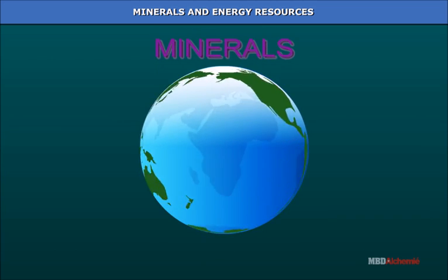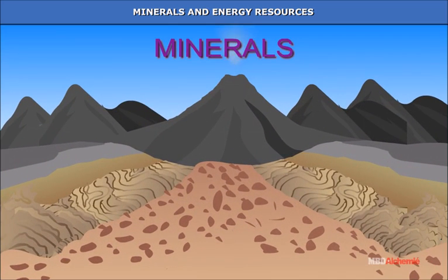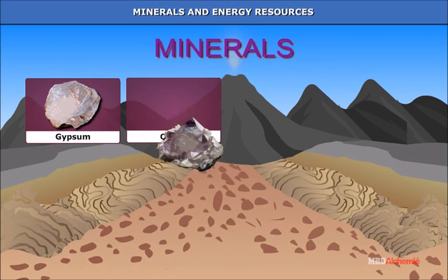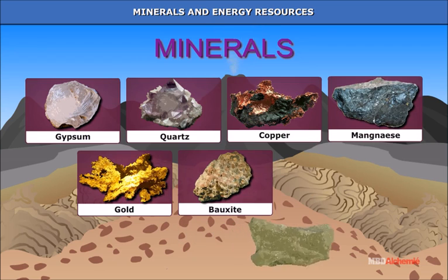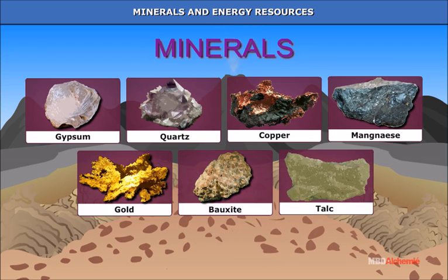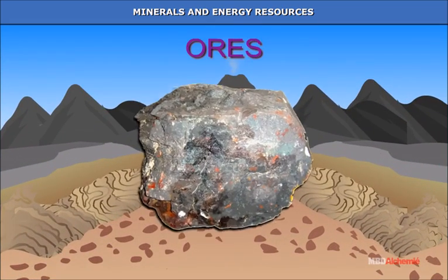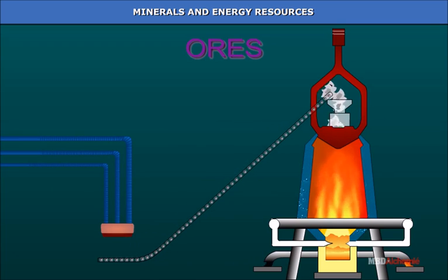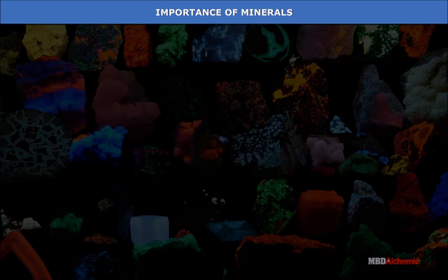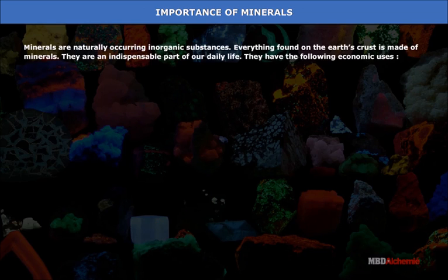Minerals and energy resources. Minerals are found in rocks on the surface of the earth or beneath it in the form of compounds. They have a definite chemical composition comprising one or more elements and can be identified by their physical and chemical properties. A mineral from which a metal is obtained is called an ore.